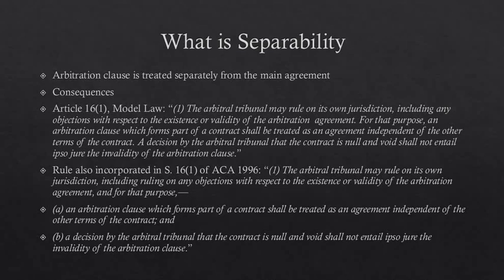The doctrinal justification is provided in clauses (a) and (b) of Section 16, which are identical to the second part of Article 16 of the Model Law: the arbitration clause is treated as an independent agreement, and even if the arbitral tribunal decides the contract is null and void, it does not divest the tribunal of jurisdiction. This is how the separability doctrine provides the logical framework.